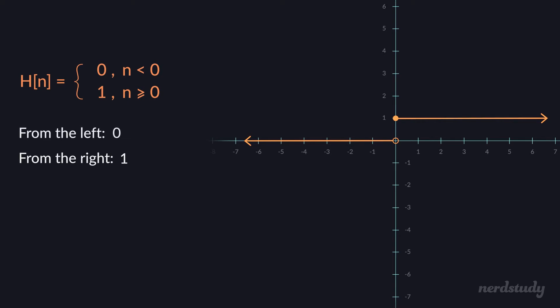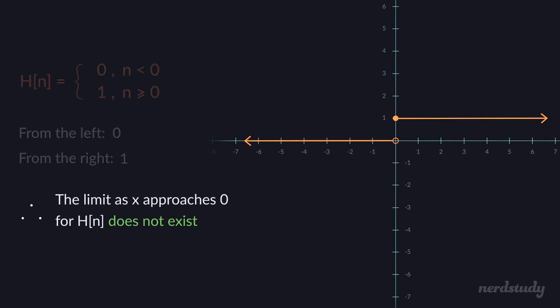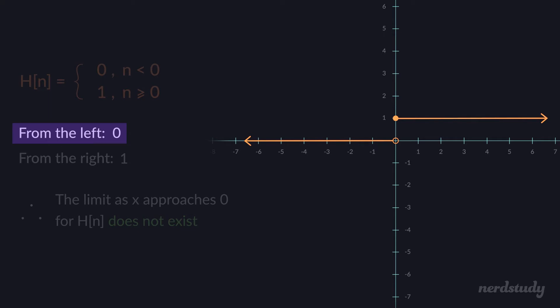That would make it seem as if the limit is 1 as opposed to 0. So the question is: what do we say when somebody asks for the limit of this function as x approaches 0? The answer is that the limit does not exist, because x approaching 0 means approaching from both the left and the right. From the left it seems to be approaching 0, and from the right it seems to be approaching 1.